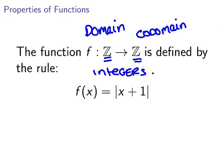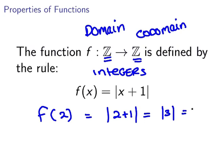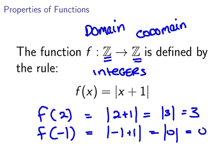Now let's evaluate this for f of 2. In that case we have the absolute value of 2 plus 1. That's the absolute value of 3 which is 3. Let's evaluate it for minus 1. In that case we would have minus 1 plus 1, and that is equal to the absolute value of 0 which is 0.